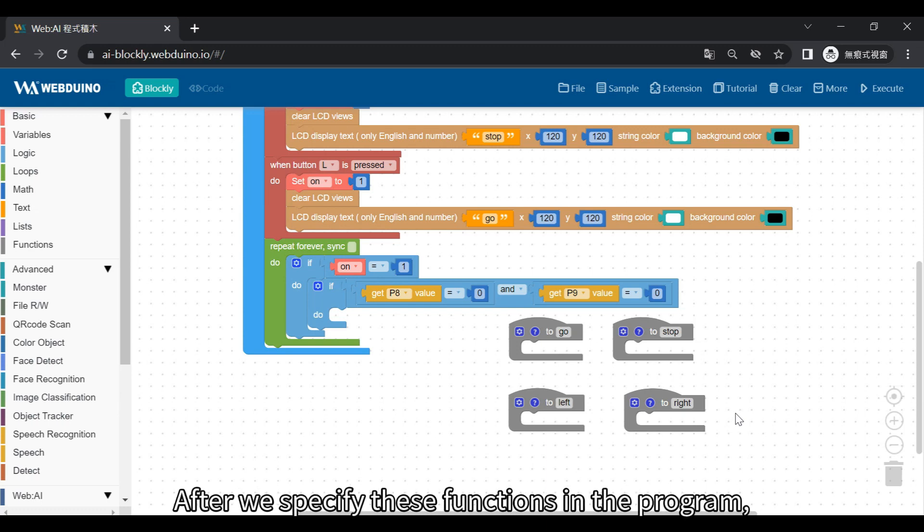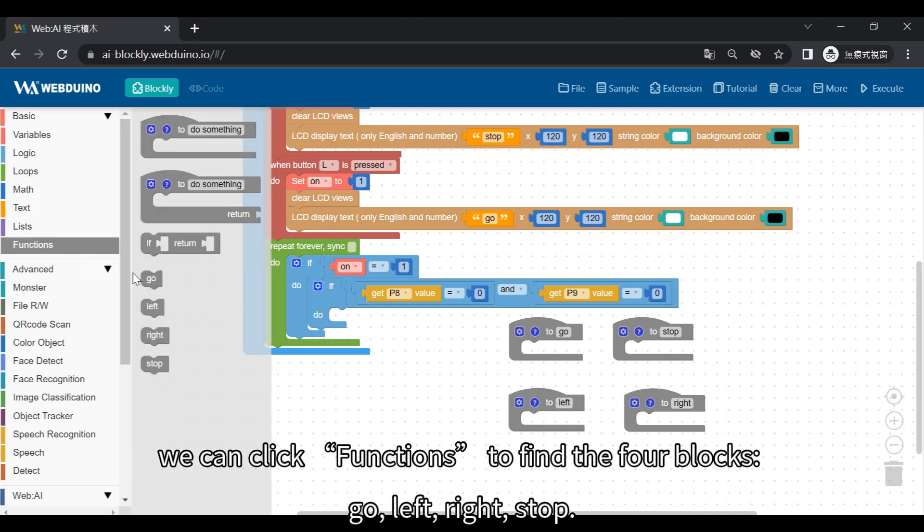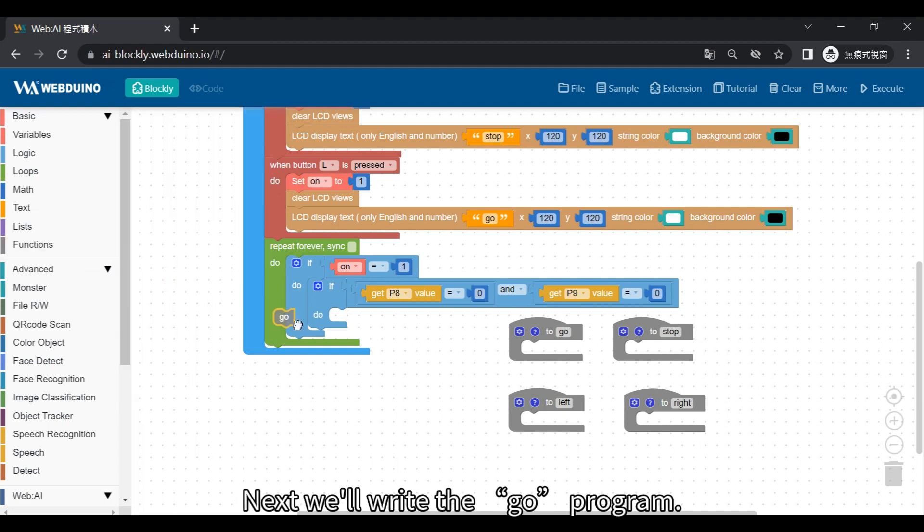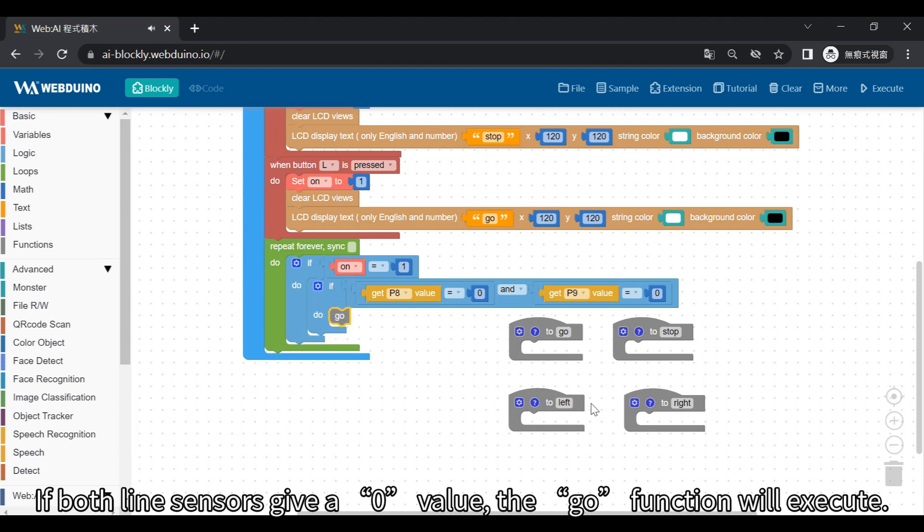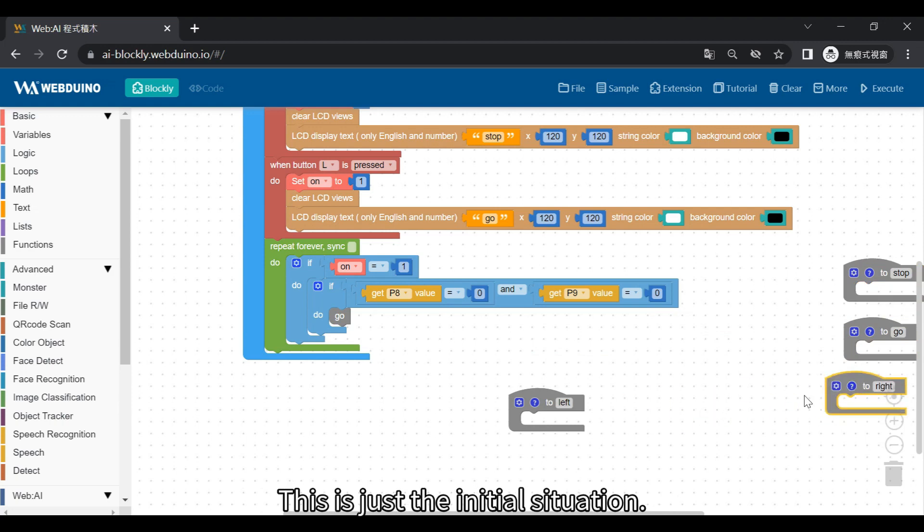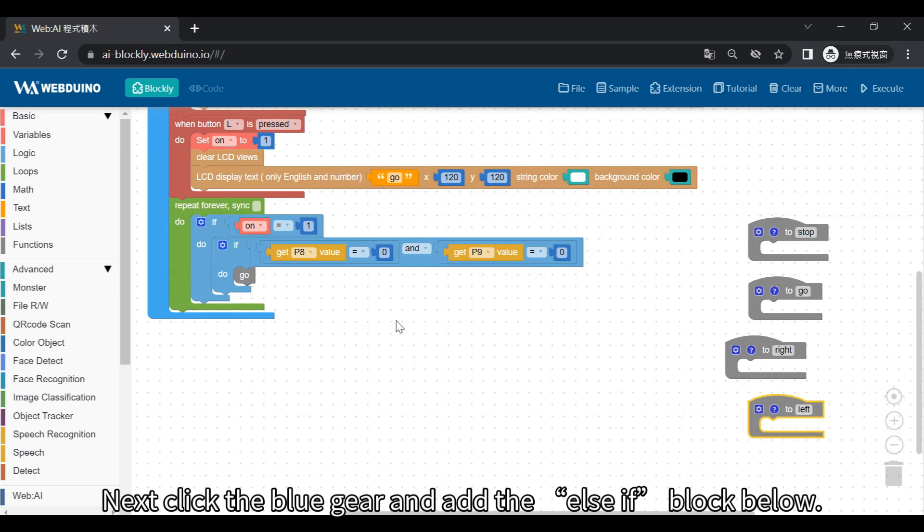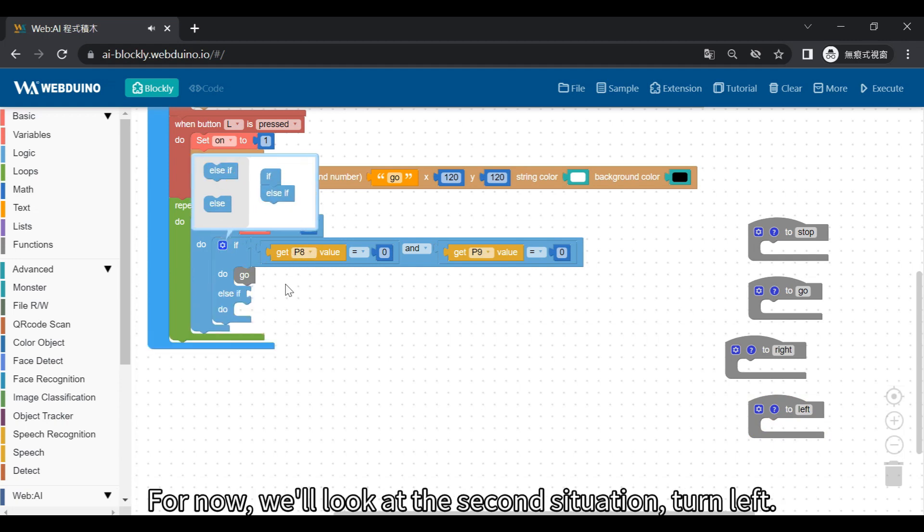We'll write these four programs later. After we specify these functions in the program, we can click functions to find the four blocks: Go, Left, Right, Stop. Next, we'll write the Go program. If both line sensors give a zero value, the Go function will execute. We'll write the Go program later. This is just the initial situation. Next, click the blue gear and add the Else If block below.